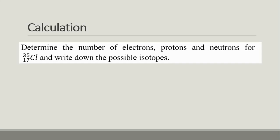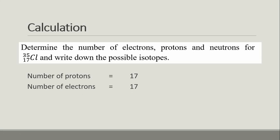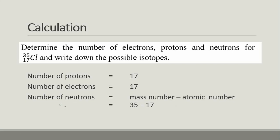Determine the number of electrons, protons, and neutrons for ³⁵Cl₁₇. Mass number is 35, atomic number is 17, chlorine atom. Number of protons = 17 (equals atomic number). Number of electrons = 17 (equals atomic number). Number of neutrons = mass number minus atomic number = 35 − 17 = 18.